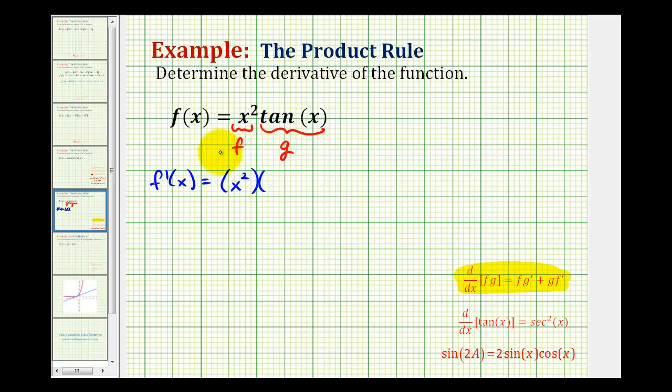The derivative of tangent x is going to be equal to secant squared x, plus the second function, or g, which is tangent x, times the derivative of f, which is the first function, so we'll have two x.